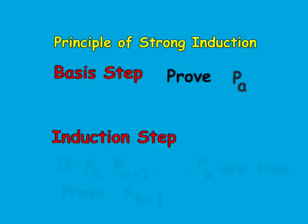We assume that p sub a, p sub a plus 1, p sub a plus 2, up to p sub k are all true, up to some arbitrary k natural. Then we derive from here that p sub k plus 1 is also true. Therefore, p sub k is valid for all k greater than or equal to a natural.